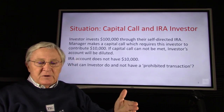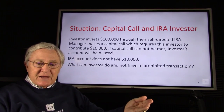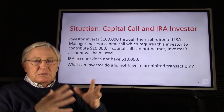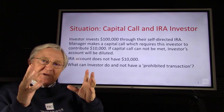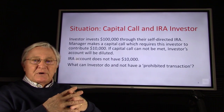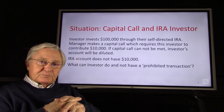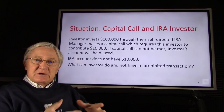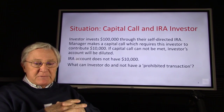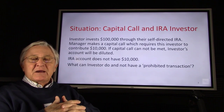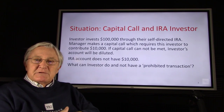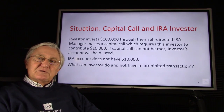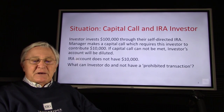Here's the scenario. An investor invests $100,000 through their self-directed IRA into an LLC, so the IRA is the owner of the interests. The manager makes a capital call which requires this investor — the IRA — to make a $10,000 contribution. And the document says if you can't make the contribution, your ownership will be diluted. It doesn't go away, but it's diluted.